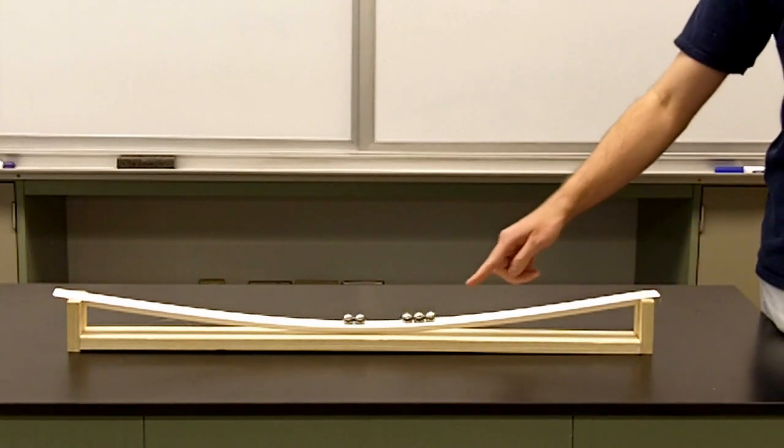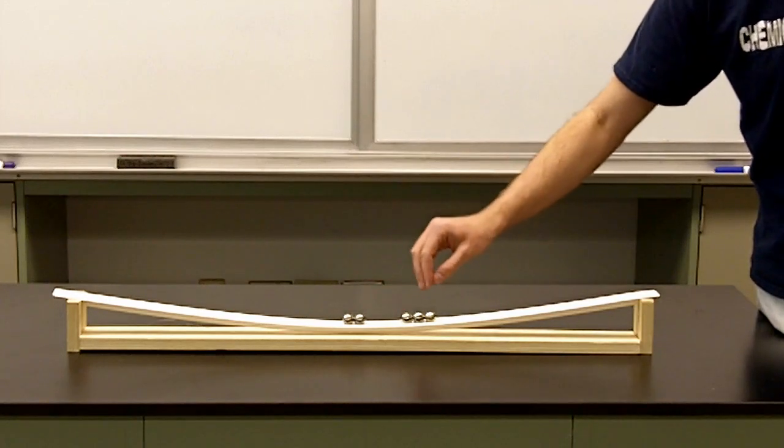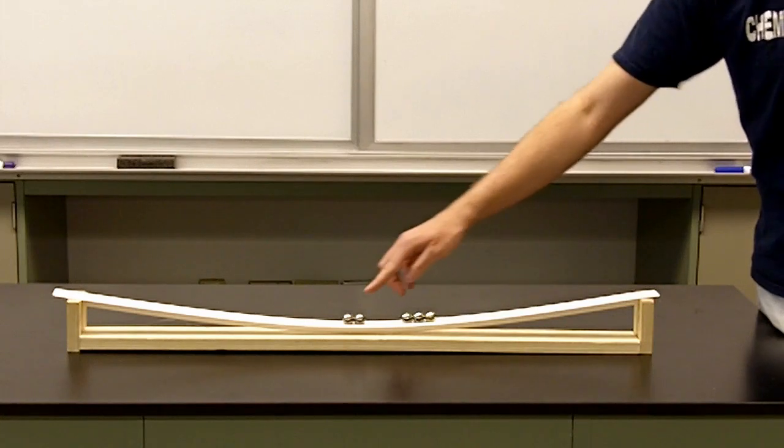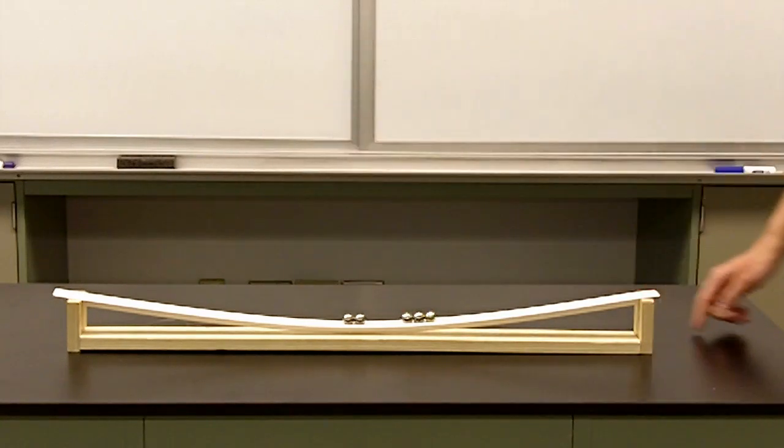As the magnetic sphere accelerates towards the metal spheres, the energy when they connect is transferred completely through and is enough to actually launch the last sphere completely off the track.